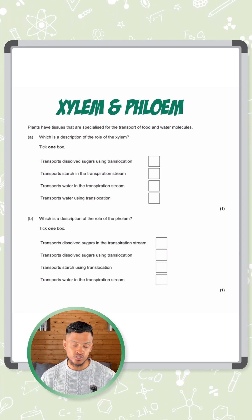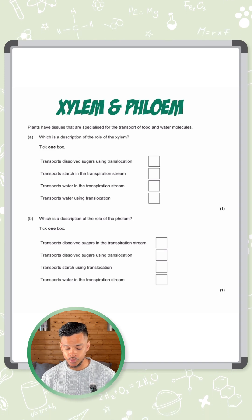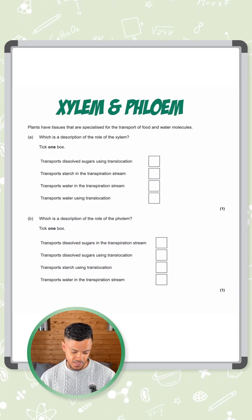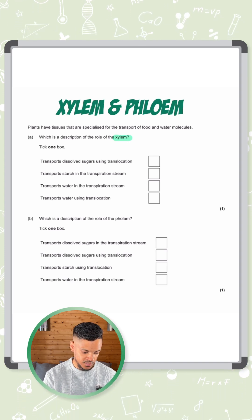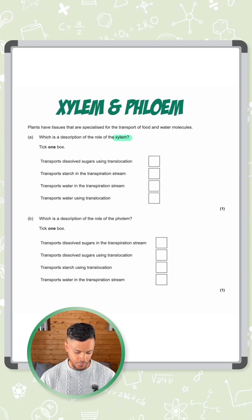Plants have tissues that are specialized for the transport of food and water molecules. Part A of the question says, which is a description of the role of the xylem? So this is a memory test. You need to memorize these.